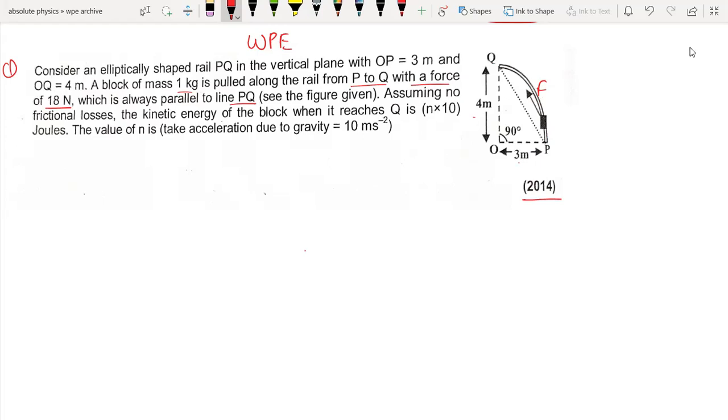Assuming no friction losses, we need to find the kinetic energy of the block when it reaches Q. At this point, work equals force into displacement.